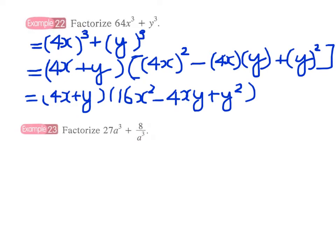Now, example 23: factorize 27a³ + 8/a³. Again, this is the form of the sum of two cubes. We have the cube of 3a plus the cube of 2/a, and it really doesn't matter even if you have a fraction inside the bracket.